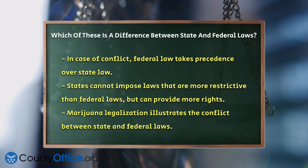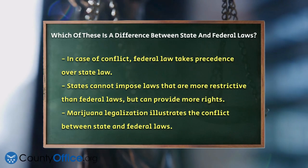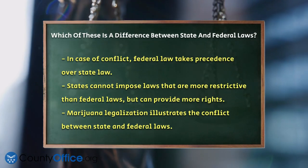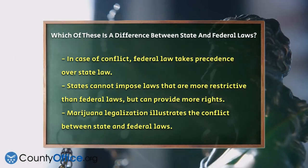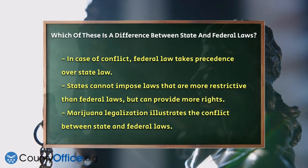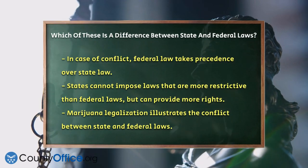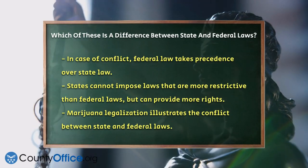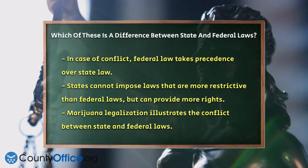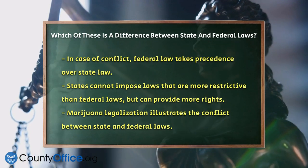In summary, the main difference between state and federal laws is their scope and authority. Federal laws are uniform across the country, while state laws vary significantly from one state to another.